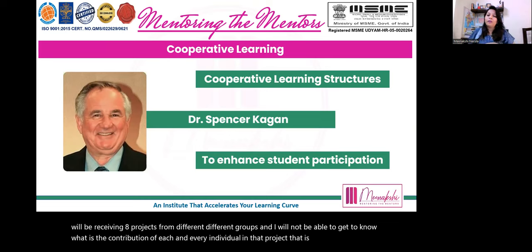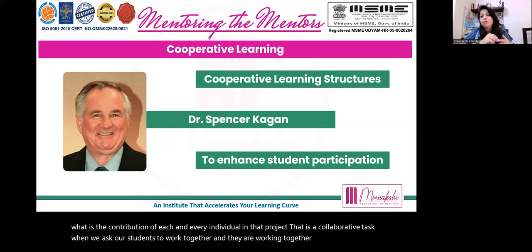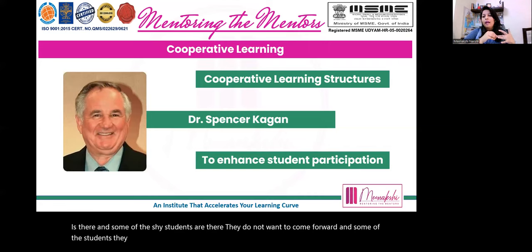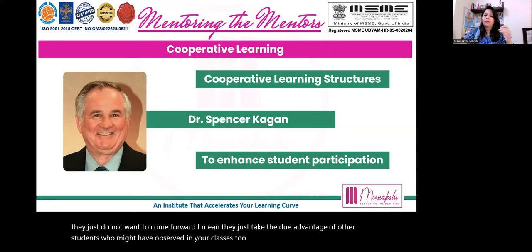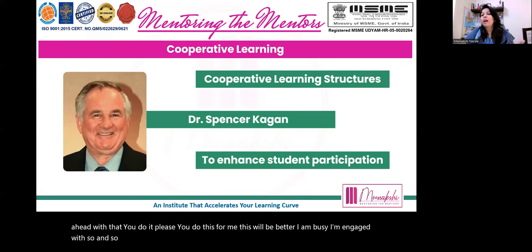When we ask students to work together in collaboration, some shy students do not want to come forward. And some students just take advantage of others — you might have observed this in your classes too. They say 'you go ahead, you do it for me, I'm busy, I'm engaged with another task.' They try to give excuses. So if there are eight members in a group, maybe two children are shy, two have doubts about whether their work will be accepted, and two are always ready with lame excuses.